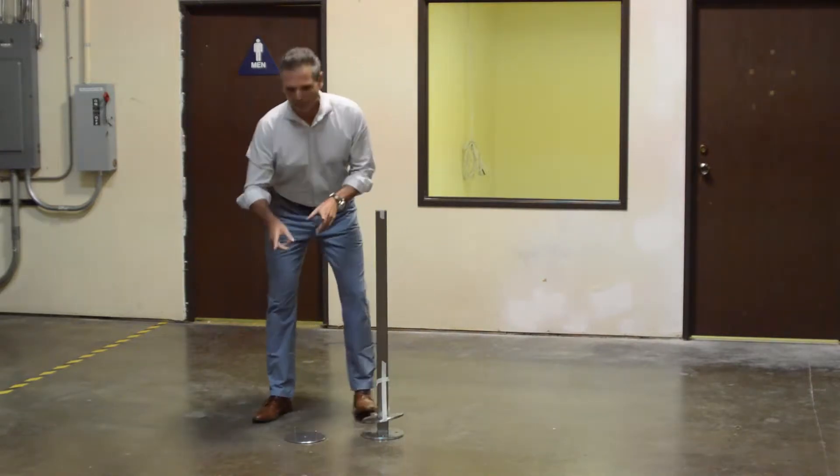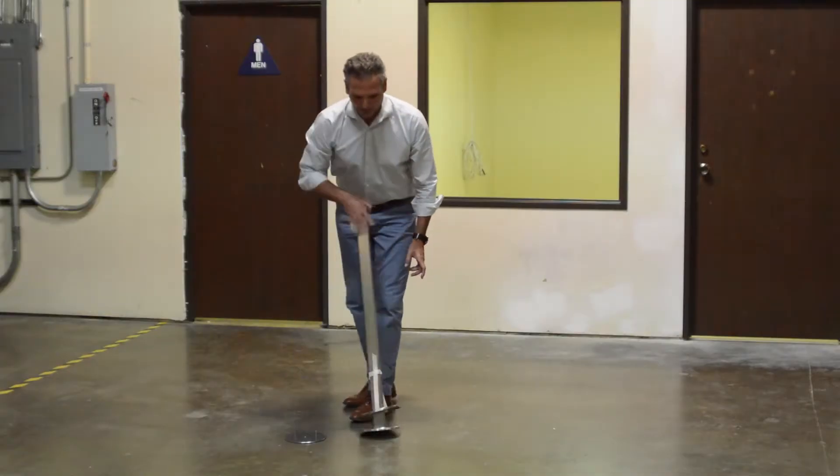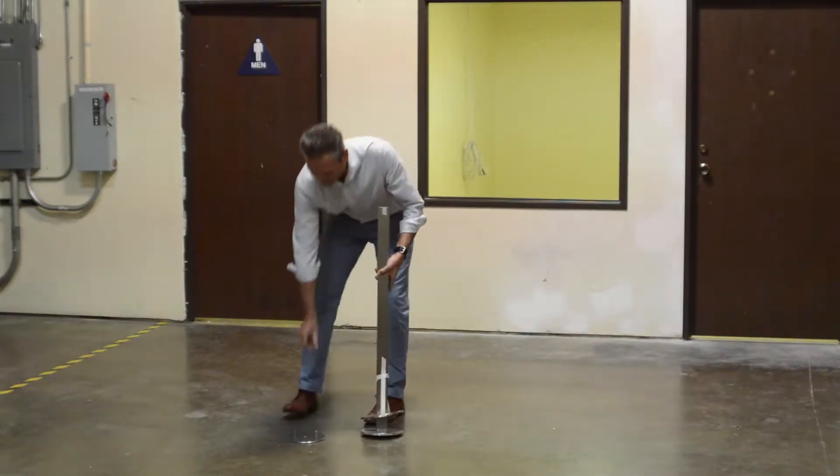The first step is to take your alignment pins. Screw them into two of the opposing holes. And now we're going to install the post onto these pins.